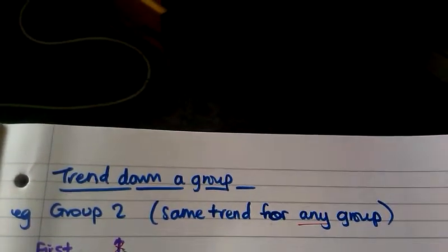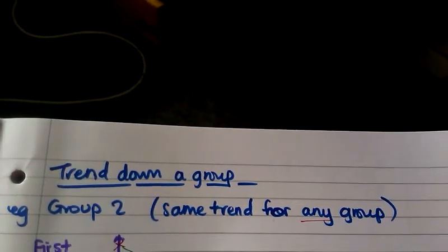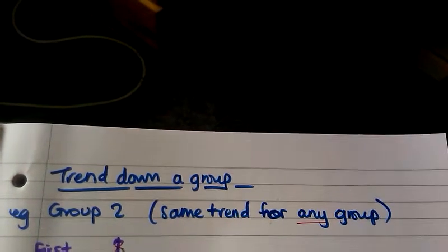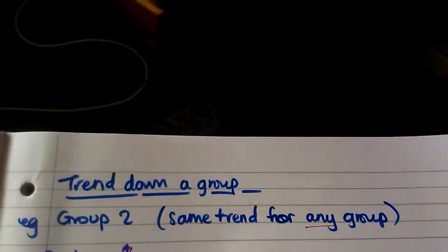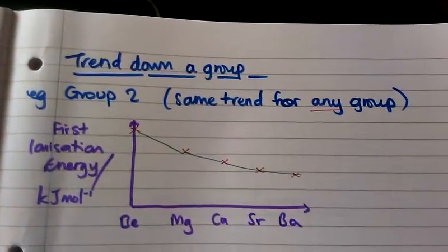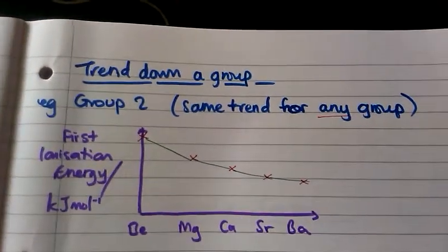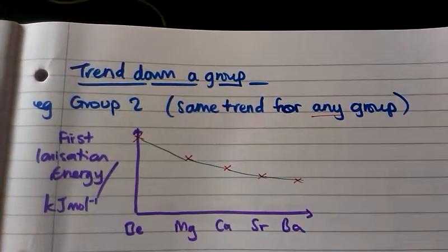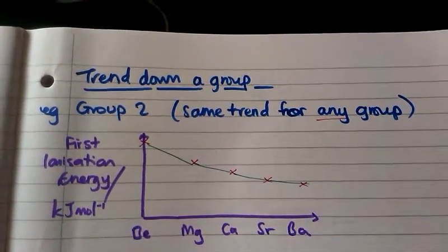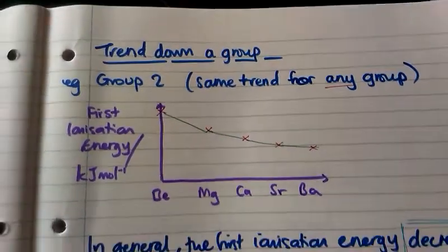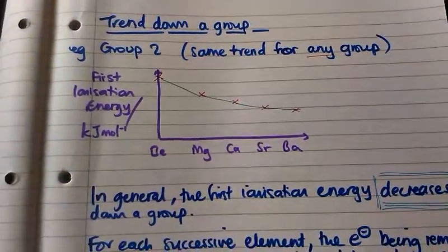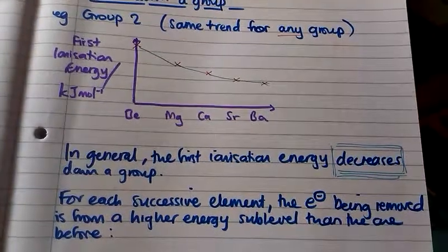The trend in ionization energy going down a group: I'm going to go through group two as an example, but this would be the same trend for any group. From this diagram it shows that the first ionization energy decreases down group two, and in general that's the case for any group.